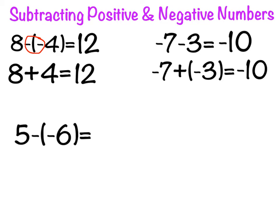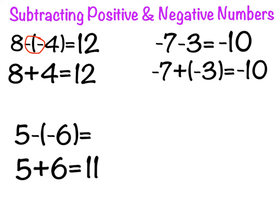Here's another example similar to the first one that we looked at. What is positive five minus negative six? Like we talked about previously, we know that two negative signs next to each other, like they are in this problem, come together to create an addition symbol. Our problem really looks like this: five plus six. Using our basic math fact knowledge, we know that five plus six is equal to eleven. Because of this, we also know that five minus negative six is also equal to eleven.